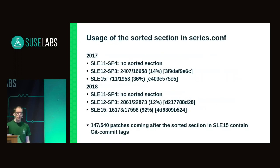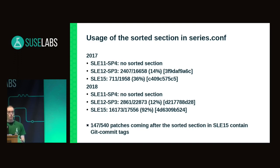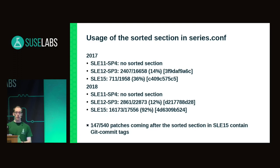The next significant change is in the usage of the sorted section, which went up significantly, especially for the SLE15 branch. Essentially nowadays, in principle, every commit in the SLE15 branch that is a backport of an upstream commit is added to the sorted section. In practice, there is still some content outside: before the sorted section are backports from stable branches, which are naturally ordered. After the sorted section are out-of-tree patches organized using the old subsystem/feature/driver approach.